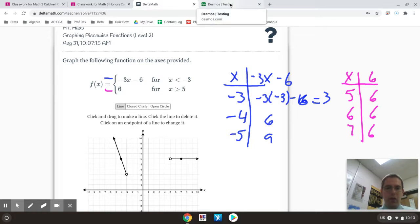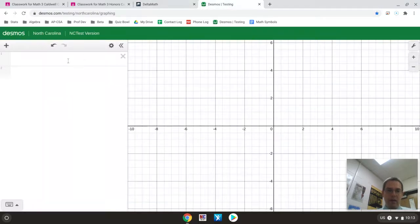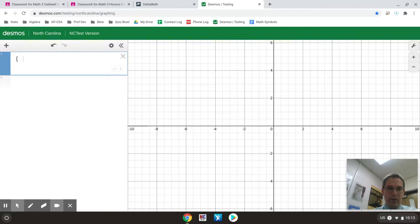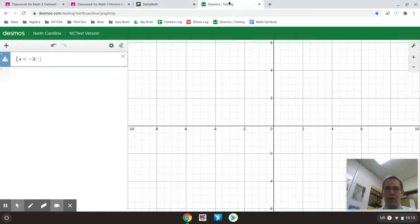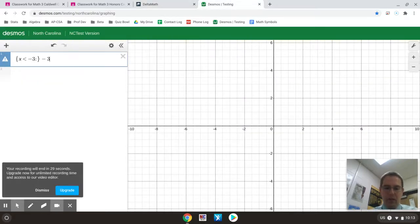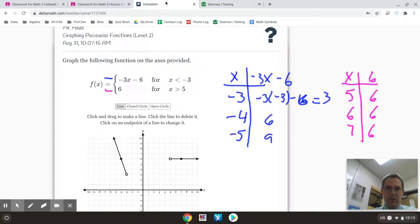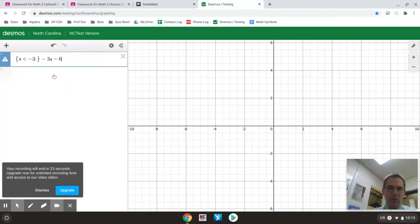So I'm going to pull Desmos up, and the first equation is for x is less than negative 3. So I'm just going to type in my curly brace to get my piecewise, and it's x is less than negative 3. And remember, you do your colon, and then the equation there is negative 3x minus 6. So negative 3x minus 6. And that is going to put my brace in the wrong place. We'll fix that. And you see it has correctly graphed that part of the graph.